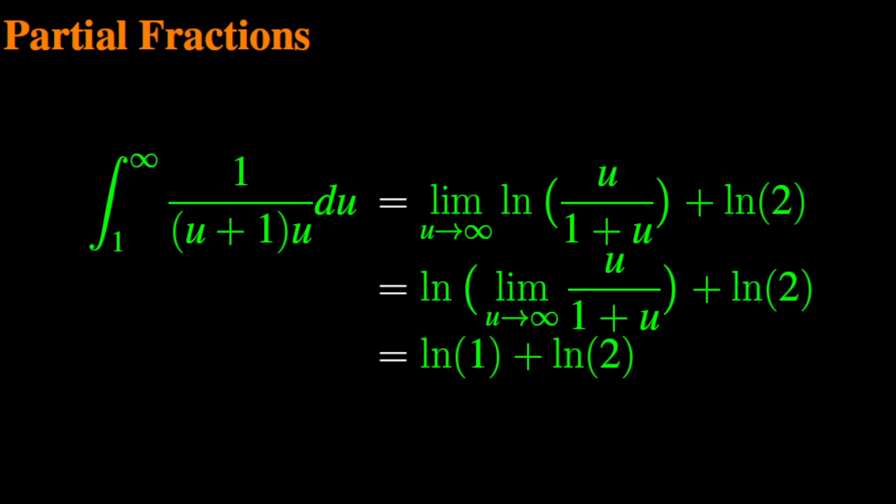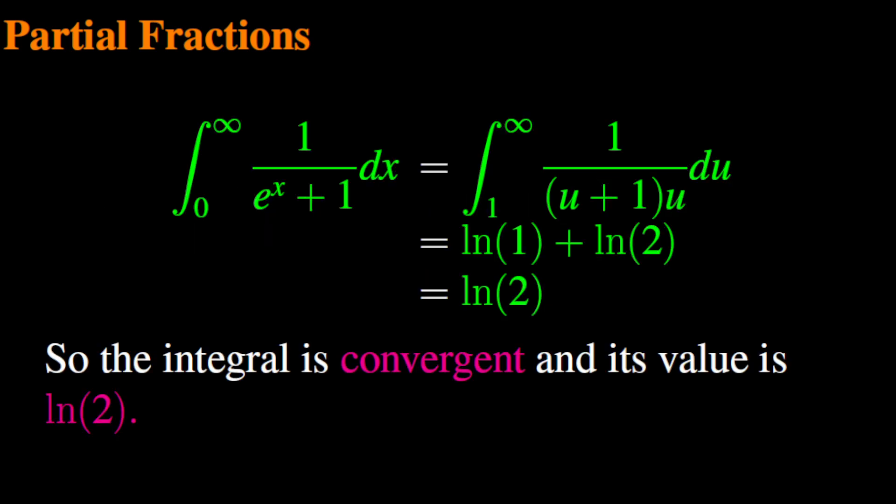This is because the limit as u goes to infinity of u over 1 plus u is 1. In sum, the integral from 0 to infinity of the fraction 1 over exponential of x plus 1 dx, which is equal to the integral from 1 to infinity of 1 over u times u plus 1, is equal to the natural log of 2. Finally, the integral from 0 to infinity of the fraction 1 over exponential of x plus 1 dx is convergent, and its value is natural log of 2.